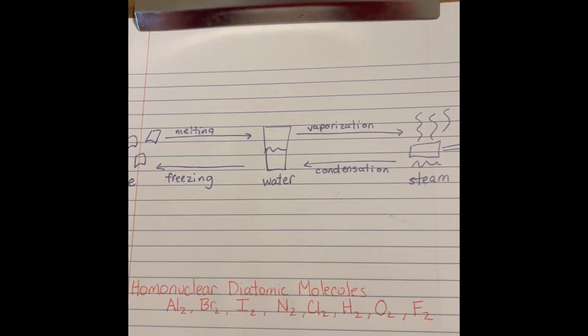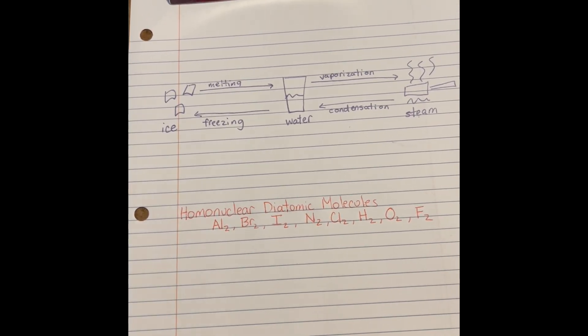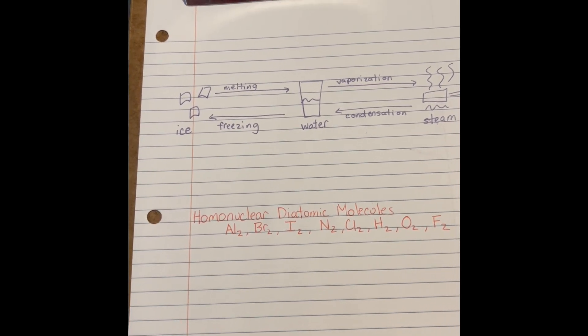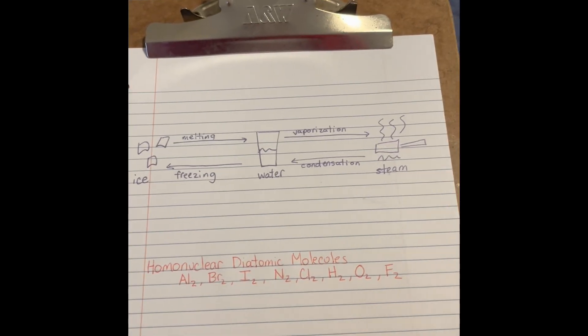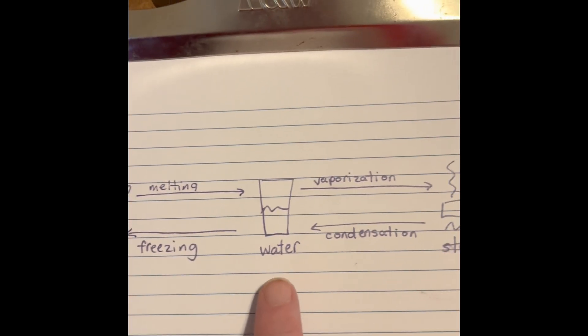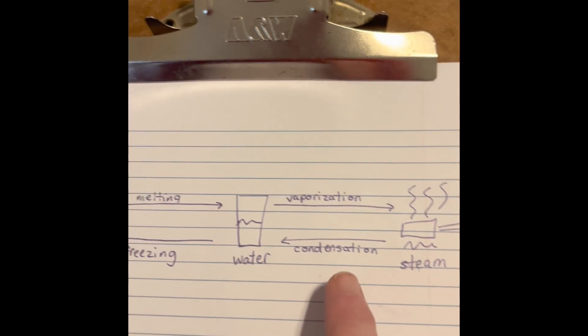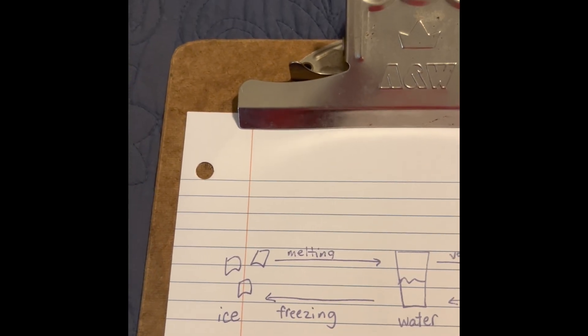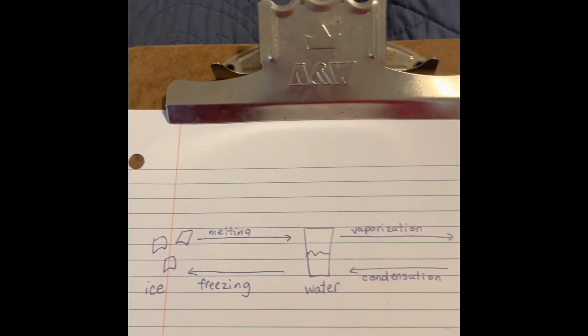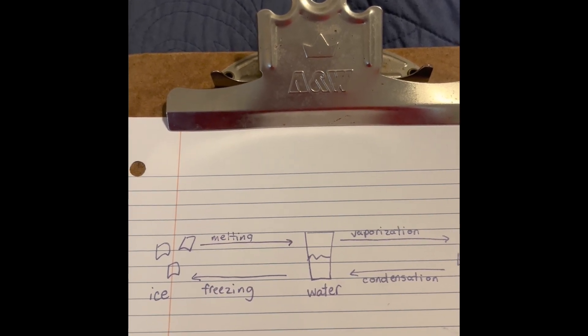Okay, so we're going to jump in to chemical reactions and chemical equations. We have talked about physical changes, which include phase changes, right? So phase changes equal physical changes. I've got ice right here, and it can melt and go to water, it can vaporize and go to steam, and conversely it can condense to go back to water, and it can freeze to go back to ice. Now we're going to jump in to chemical changes.